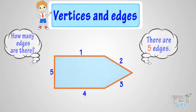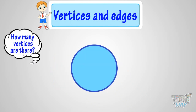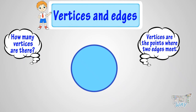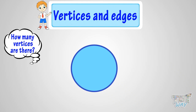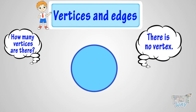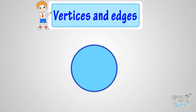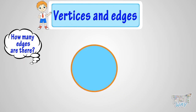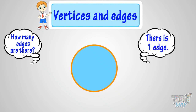Here we have one more example. Let's count the vertices. We know vertices are the points where two edges meet, or they are the corners in the figure. Oops! There is no corner in this figure where two lines or two edges meet. So there is no vertex in the figure. Now let's count the edges. We know edges are the lines that join the vertices. There is only one continuous line in this round shape that does not end anywhere. So this figure has one edge, which is round in shape.